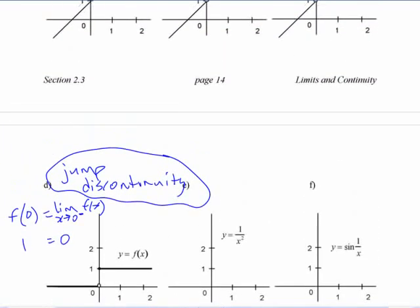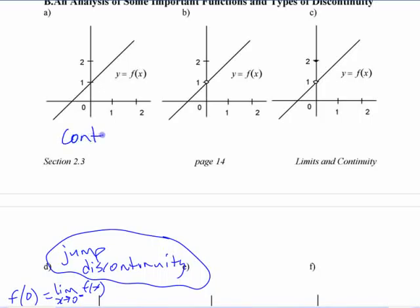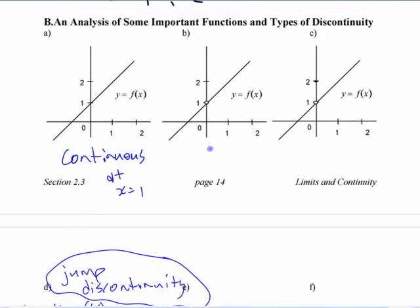Some of the other ones up here, this first function is continuous, right? This is continuous at x equals 1. This is actually a continuous function, but it has a discontinuity at 0. This is called a removable discontinuity.